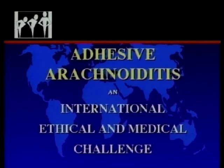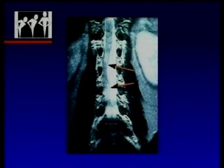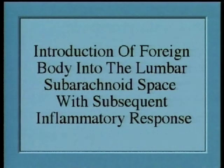Adhesive arachnoiditis is a complex spine challenge. It is an international ethical and medical challenge. This is an example of adhesive arachnoiditis as shown on an oil myelogram. The characteristic pattern and irregularity can also be seen on other studies, such as this enhanced CT scan. The arrow shows residual droplets of oil. This is an MRI scan showing the severe changes of the cauda equina produced by this oil substance.